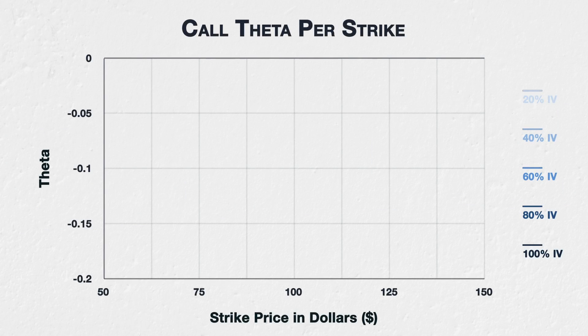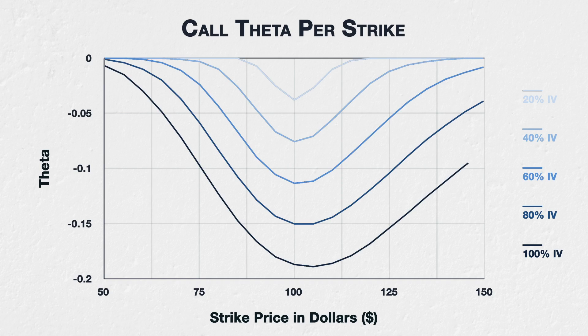Implied volatility will also affect the theta of options. Let's look at the call options from the example in the previous lecture and see how the theta of these options would be affected by different levels of implied volatility. This chart shows the theta for all options of a fictional asset with a current price of $100, 30 days to expiry, and varying levels of implied volatility.